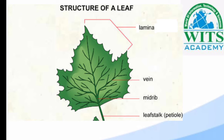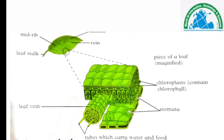You can see in this picture: this is the midrip, this is the leaf stalk, this is the lamina, and this is the vein. اگر ہم اسی leaf کو magnified کروائیں تو آپ دیکھ سکتے ہیں کہ magnified leaf میں chloroplast موجود ہے۔ Chloroplast میں chlorophyll ہے جس کی مدد سے photosynthesis کا process ہو سکتا ہے۔